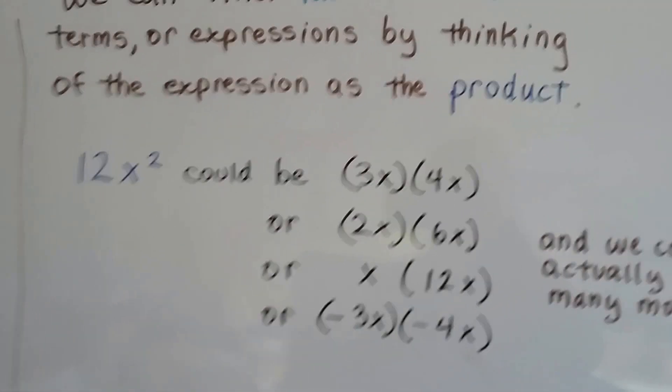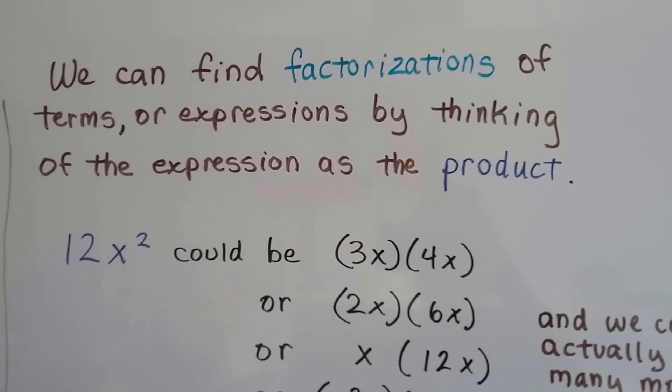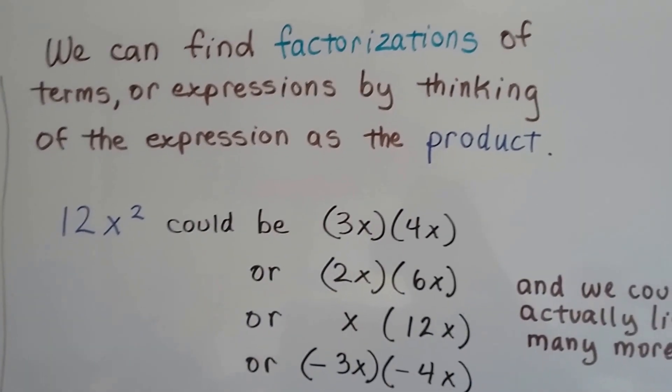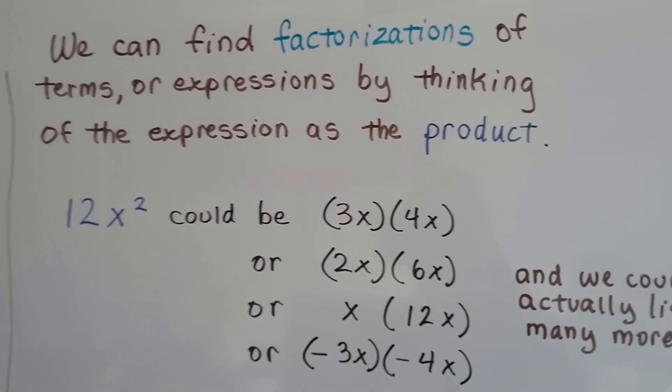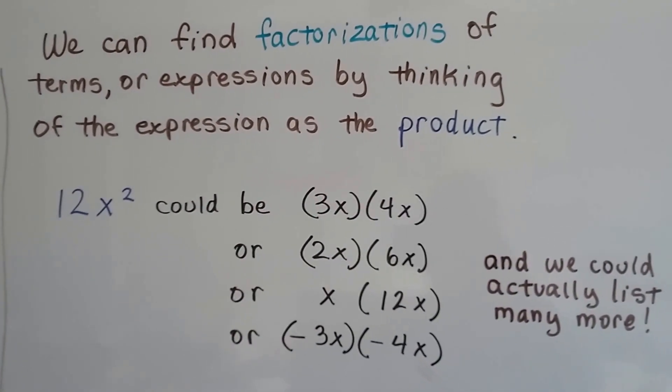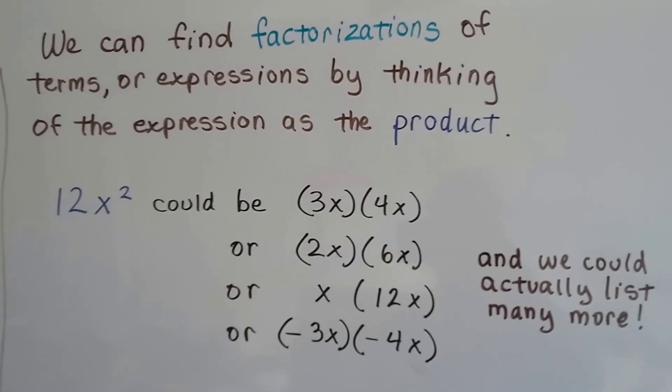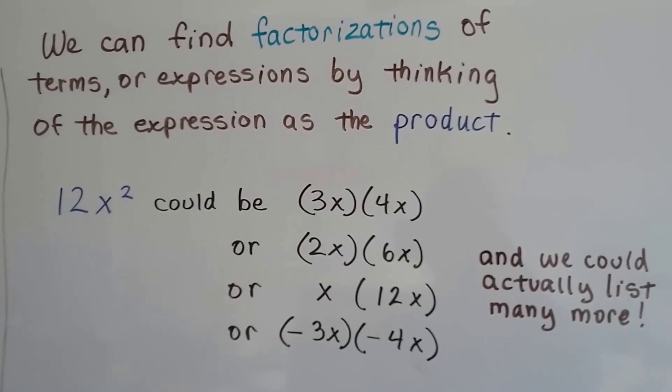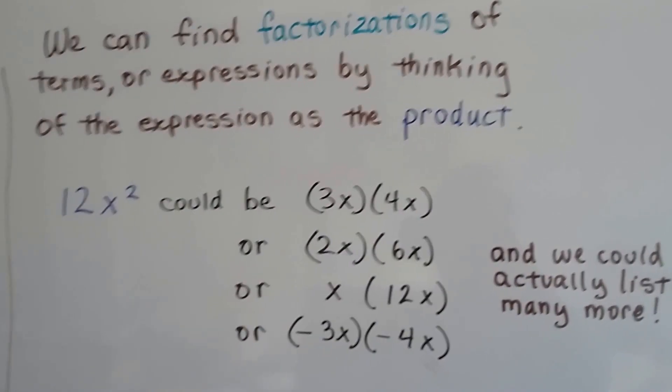We can find factorizations of terms or expressions by thinking of the expression as the product. 12x squared could be 3x times 4x. 3 times 4 is 12 and x times x is x squared. We could even do 2x times 6x or an x times a 12x. That would give us the x squared for the 12x squared. We could even do negative 3x times negative 4x. And there's actually many more that we could list.